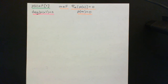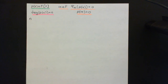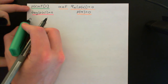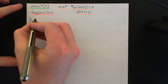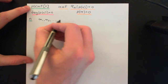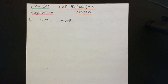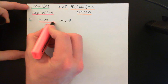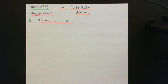Let's think about what happens if p of x does indeed have n distinct roots in the field capital F. That actually allows us to factorize p of x into a product of degree 1 polynomials. Let's call our roots alpha 1, alpha 2, all the way up to alpha n — all distinct elements of the field, each with the property that applying the evaluation homomorphism gives zero.